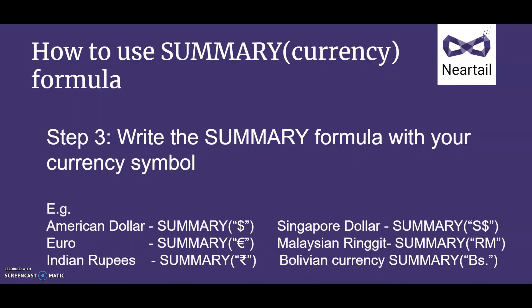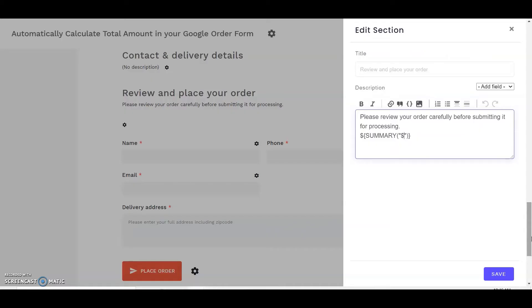The syntax for the summary function is summary(currency), where currency is the identifier to find the price in the description and answer choices. The currency can be a symbol or text, but it has to exactly match the format used in the description and answer choices. Note that the summary function returns HTML, so it must be used in the description as a string literal.